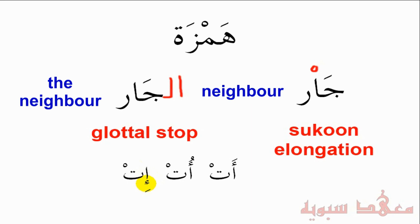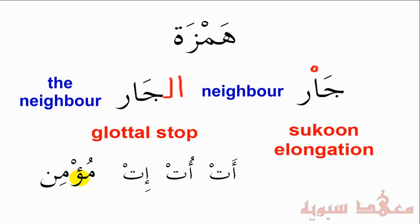A Hamza can also have a Sukun, similar to the Alif. For example, the word 'Mu'min.' Mu'min means a believer. Now here the Hamza is on a Waw — it's not on an Alif. But we'll explain this in another lesson insha'Allah. The point is this is a Hamza, and it has a Sukun on it. So we say 'Mu'...'